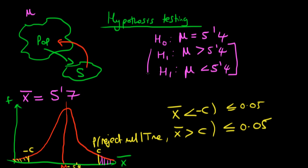However, there is a different alternative hypothesis: let's say we had the alternative hypothesis that mu just didn't equal 5 foot 4. Now we construct two different critical regions. I'm going to call the upper bound c-prime and the lower bound minus c-prime. The idea is that if we find a value of x-bar which is greater than c-prime, we will reject the null hypothesis; and if we find a value of x-bar which is less than minus c-prime, we will also reject the null hypothesis.